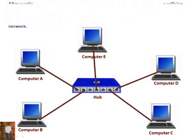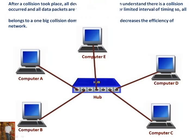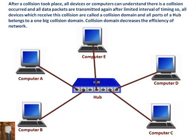After a collision takes place, all devices or computers can understand there is a collision occurred, and all data packets are transmitted again after a limited interval of time. All devices which receive this collision are called a collision domain, and all ports of a hub belong to one big collision domain. Collision domain decreases the efficiency of the network.